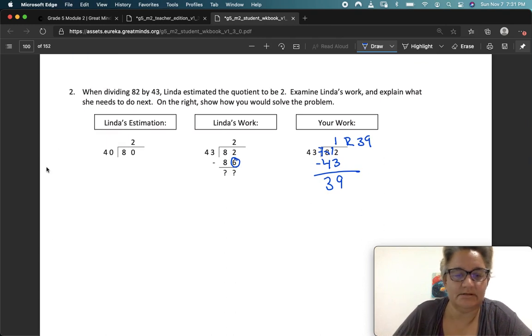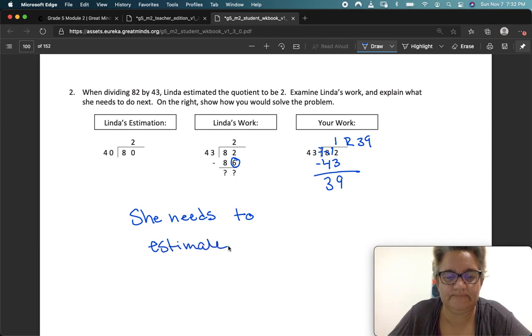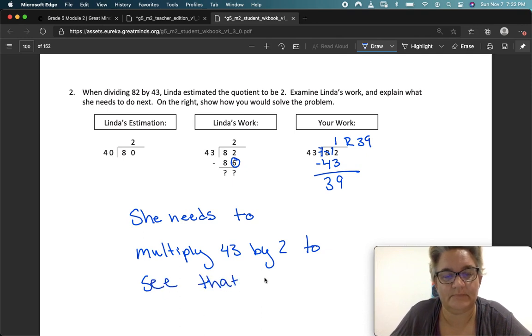Explain what to do next on the right. Show how you would solve the problem. She needs to estimate lower or multiply 43 by 2 and she would see. You see what she did and you know what she did. Now we need to figure out a way to put it in words. She needs to multiply 43 by 2 to see that 86 is larger than 82.